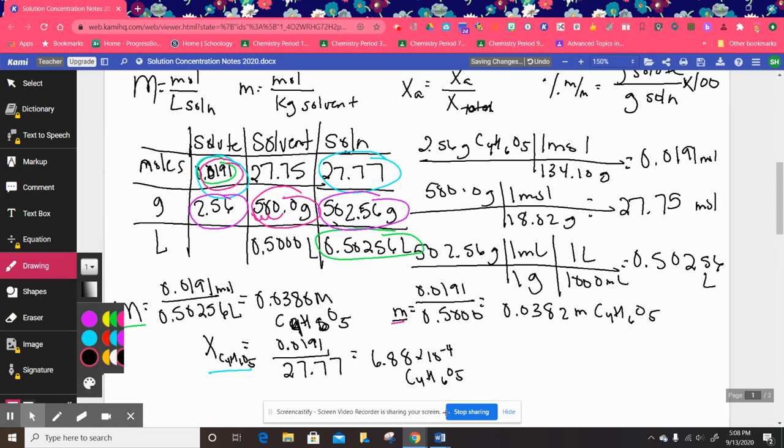So percent by mass, I need 2.56 grams per 502.56 grams of solution times 100 for a 0.509% C4H6O5 solution. And I underlined that one in purple.